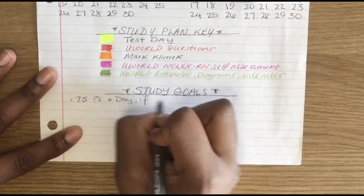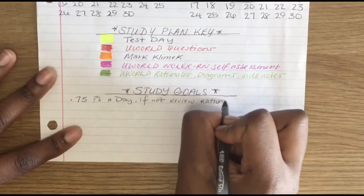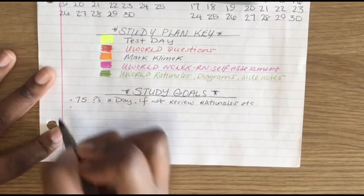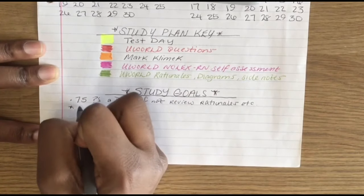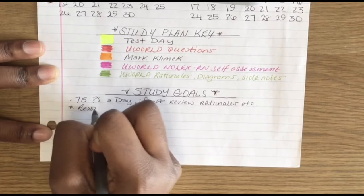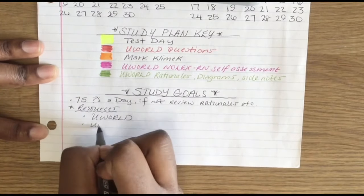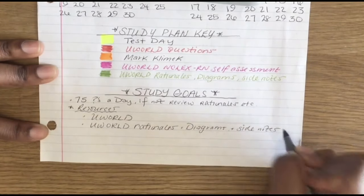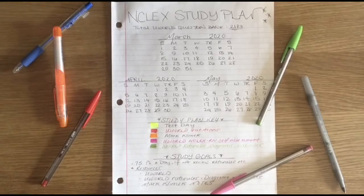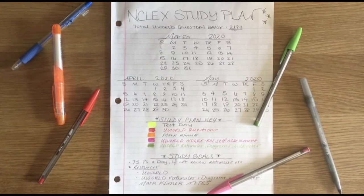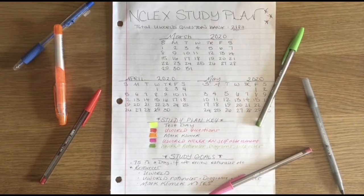When you're making a study plan for the NCLEX, you want to set yourself some major goals. My goals were to do 75 questions a day and if I chose not to do questions, then I would review rationales. And under my goals, I also wrote down the sources that I'd be using to study for the NCLEX, which included Uworld and Mark Klimek. I also just stated that I would be using my Uworld rationales that I wrote, the diagrams that I drew, and side notes that I made as well. So after you finish your study goals, this is how your front page of your study plan should look.